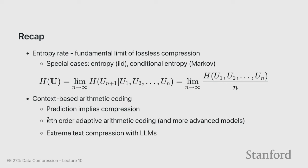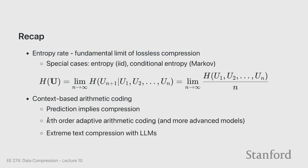In the last couple of lectures we have been looking at compression for non-IID data. We started looking at conditional entropy, conditional probabilities, and then we went into entropy rate, which is the fundamental limit of lossless compression for stationary sources — just like entropy is the fundamental limit for IID sources and conditional entropy is the fundamental limit for Markov sources.